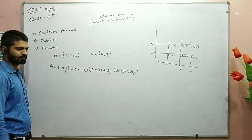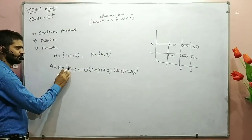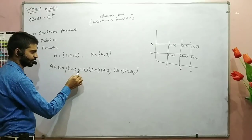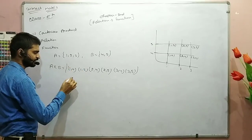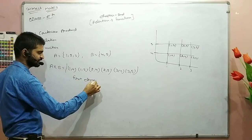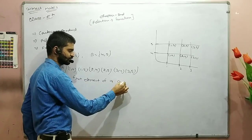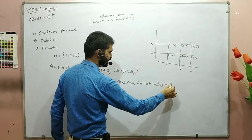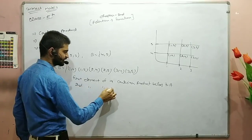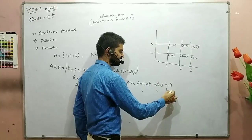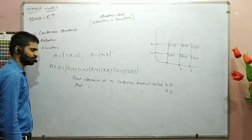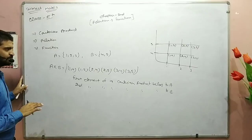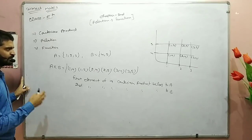I will use this method to demonstrate the Cartesian product. The first element of the Cartesian product belongs to set A, and the second element of the Cartesian product belongs to set B. The Cartesian product is a set, and we have to discuss some observations about it.